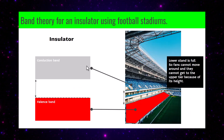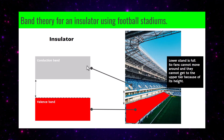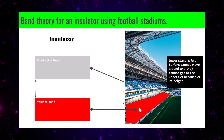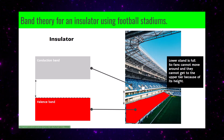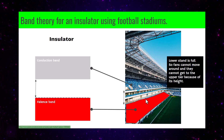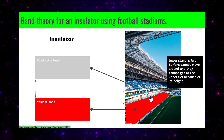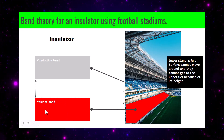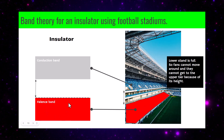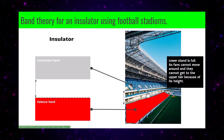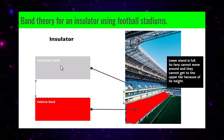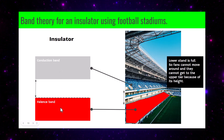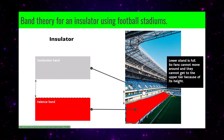For an insulator, imagine a stadium where the bottom tier is completely filled with spectators, but they can't get to the next tier because of a big wall. That wall represents the energy gap. The conduction band — the upper tier with many free seats — is inaccessible, so that stadium models an insulator.